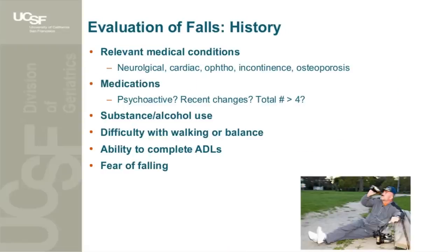Other relevant parts of the falls history include thinking about comorbidities, the type and number of medications or recent changes, substance and alcohol use, subjective difficulty with walking or balance, ability to complete activities of daily living such as bathing, dressing, toileting, and grooming, as well as the fear of falling.